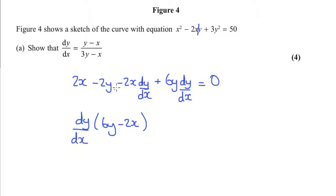I'm going to add the terms that don't have the dy by dx's to the other side, so that's going to be my 2y and a minus 2x. I can then divide by this bracket here, so dy by dx is 2y minus 2x, divided by 6y minus 2x, and then I can divide everything by 2. So, that's going to be a y minus x over 3y minus x.